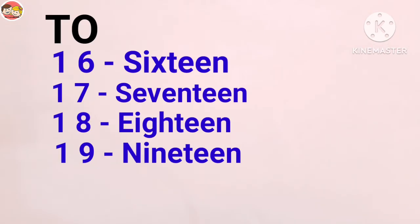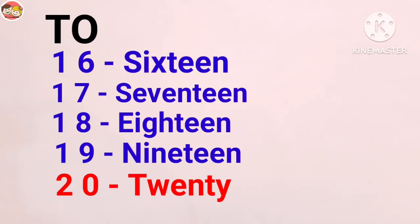Then, two zero, 20: T-W-E-N-T-Y. T-W-E-N-T-Y. 20. The number name of 20 is varied.